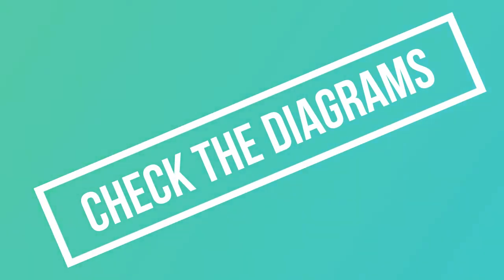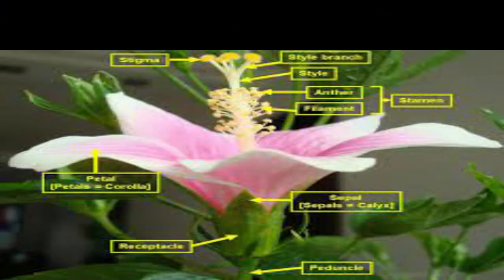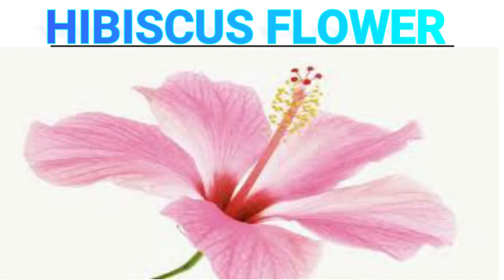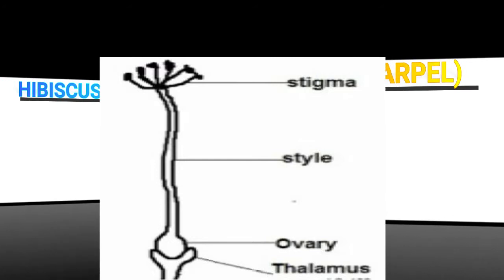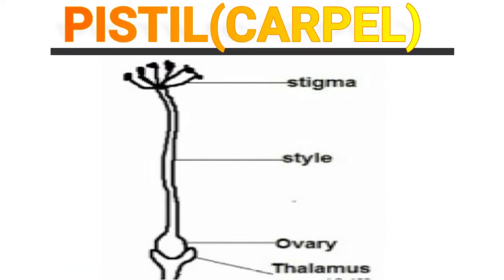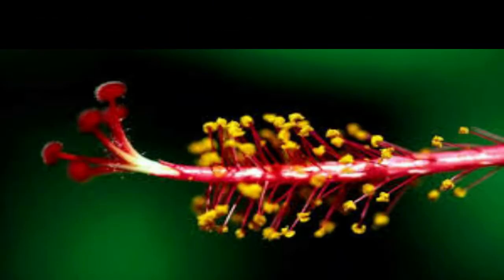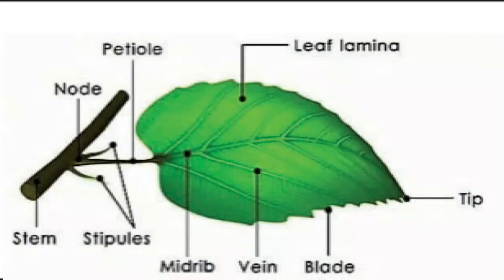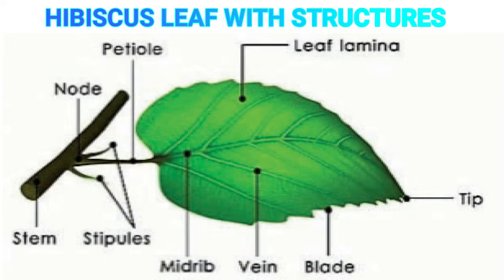Let's check the following labeled diagrams. That is the labeled diagram of hibiscus flower, the labeled diagram of pistil or carpel, the labeled diagram of stamen, and the leaf diagram of hibiscus plant with their structures.